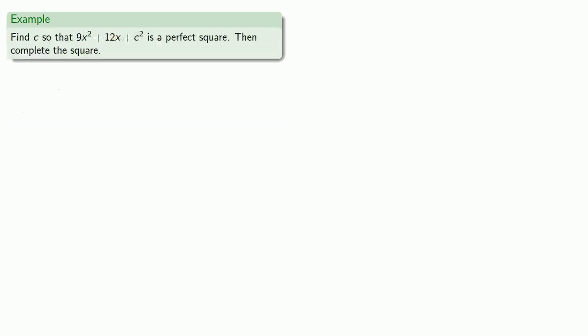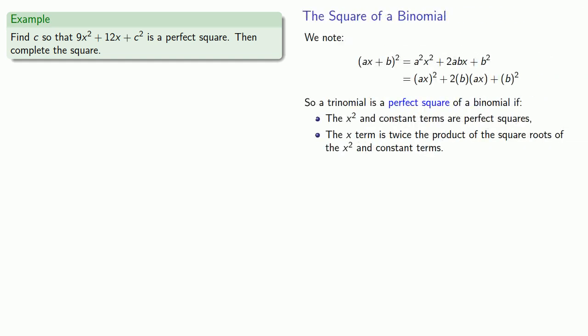So can we make something into a perfect square? So let's find c so that 9x squared plus 12x plus c squared is a perfect square, and then we'll complete the square. So remember that the trinomial is going to be a perfect square only if the x squared and the constant terms are perfect squares, and the x term is twice the product of the square roots of the x squared and the constant terms.